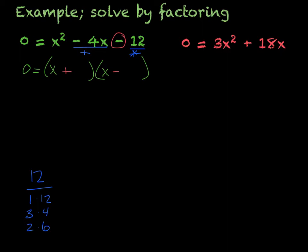If I use 1 and 12, I cannot subtract to get a negative 4. If I use 3 and 4, I cannot subtract to get a negative 4. So it must be 6 and 2. Since it's negative here, I know it's going to have to be the bigger number with the negative. So negative 6 and positive 2. And then if I foil it back out, I will find out that that is correct.